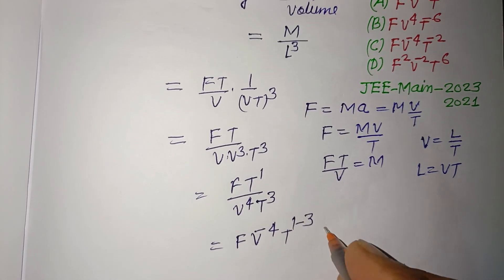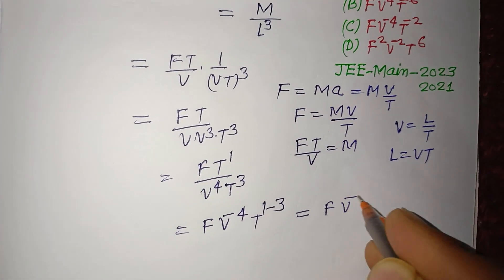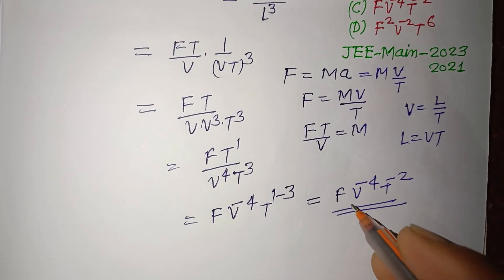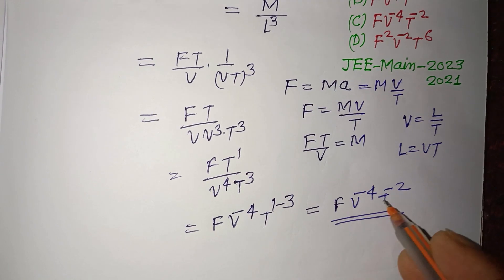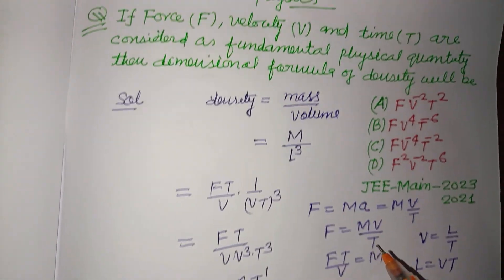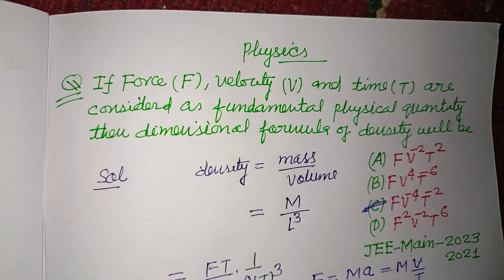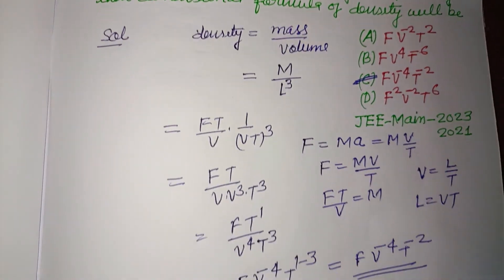This is the dimensional formula of density in terms of force, velocity, and time, which is found in option C. So option C is correct. I hope you got it. Please like the video, subscribe to the channel. Thanks for watching.